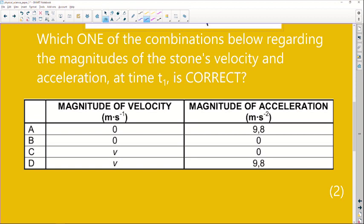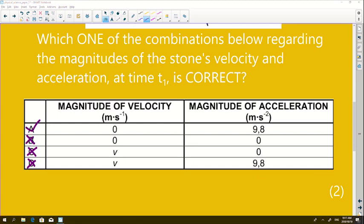So if we look at the options over here again, we can see right out of the bat that option C and option D will be incorrect, because we know that the velocity at t1 is zero. So it can be either one of A or B, the correct answer. And if we look at the magnitude of the acceleration over here, we see that for option B, they say the acceleration is zero. And we know that that is also incorrect. So we know that the correct option in this case is A.